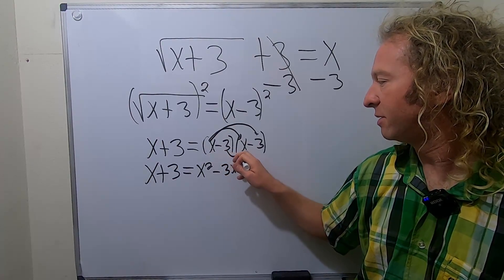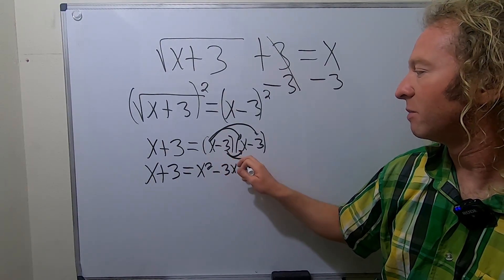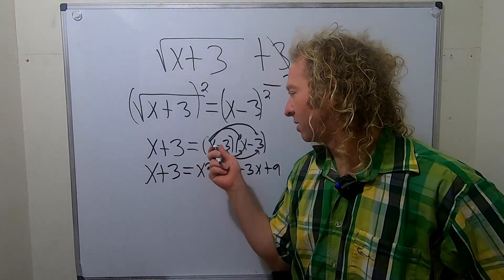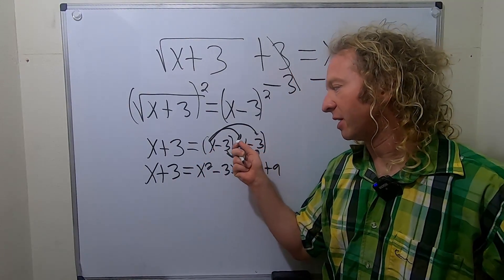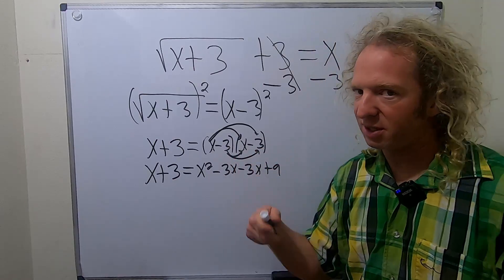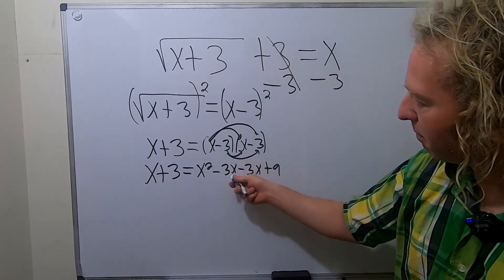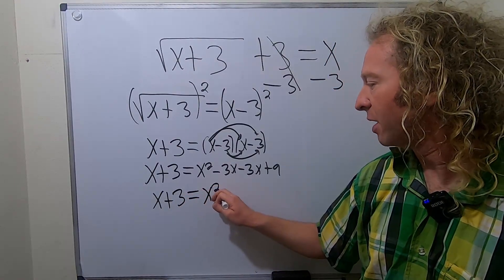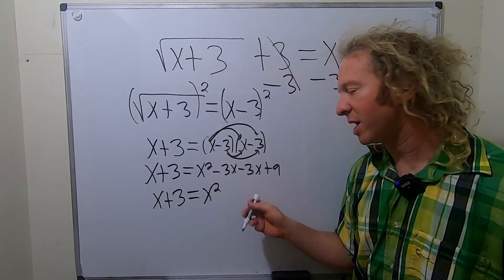It's actually FOIL, but I don't think about FOIL - I just take this, multiply it by these, take this, multiply it by these. We'll combine like terms: we have x plus 3 equals x squared, negative 3x minus 3x is negative 6x, and then we have the plus 9 here, so plus 9.